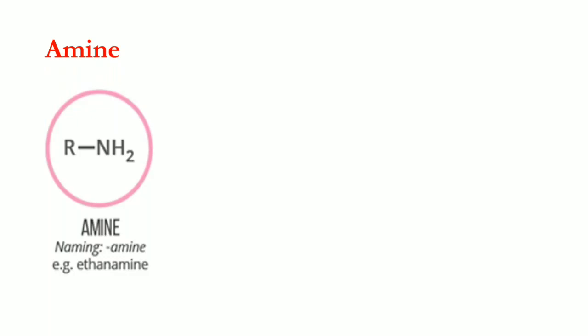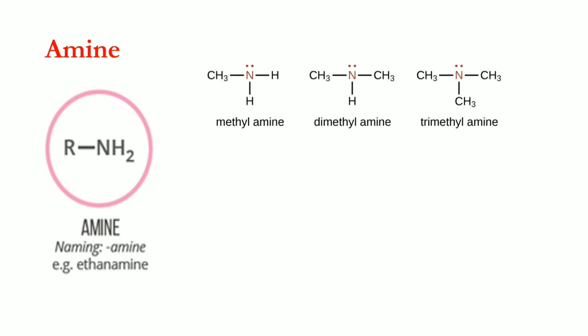Let's go to amines. The amine group is -NH2. For the names, we use the suffix 'amine'. An example is ethanamine. The simplest is methylamine: from methane, we drop one hydrogen and replace it with an -NH2 group, so CH3 becomes an alkyl group called methyl, and then amine.